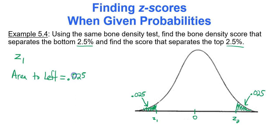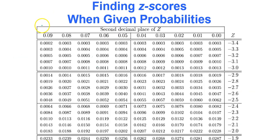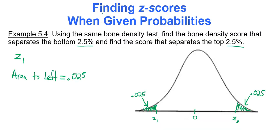You look at the body of your table and look for 0.025. I am looking for 0.025. Right here at the very bottom, I have 0.025. And you see you got negative 1.9, the second decimal place is 6. Negative 1.96. So my first data value is negative 1.96.